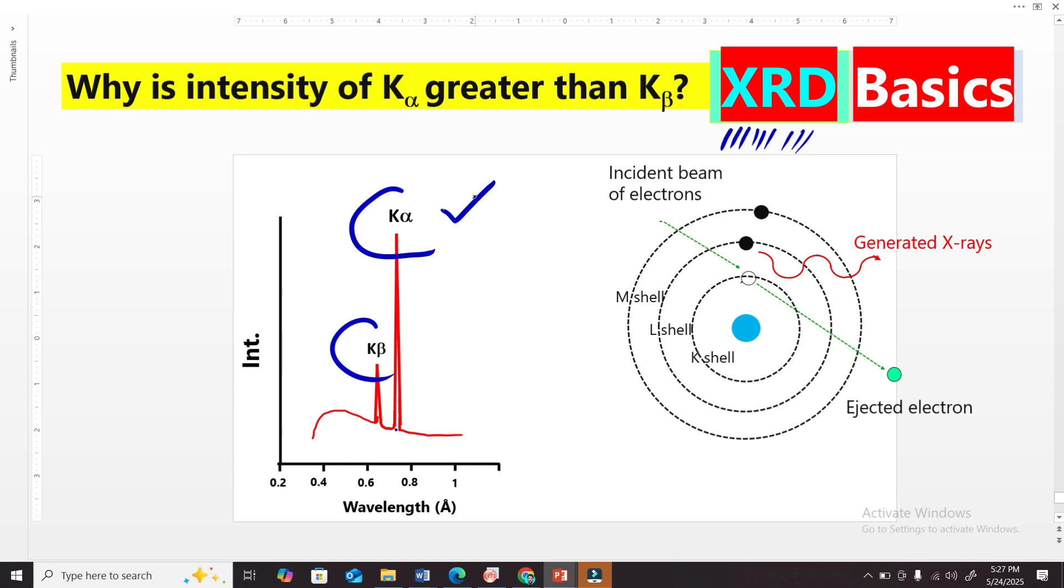We use these lines to identify the crystal structure of materials. Before discussing this, let's briefly explain how X-rays are produced. We know that when we bombard electrons, or a beam of electrons, on certain materials,